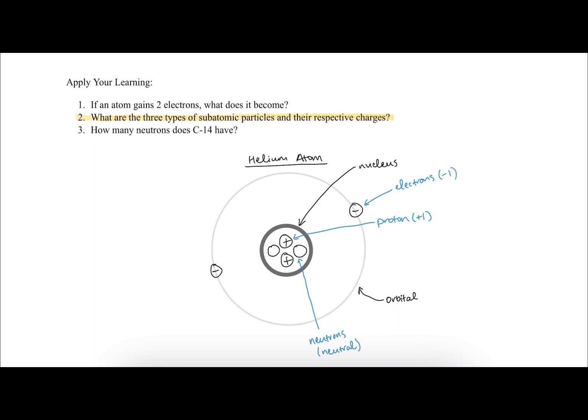So protons and neutrons are inside of the nucleus, protons carry a plus one charge and neutrons are neutral. And electrons orbit around the nucleus inside of orbitals, and they carry a minus one charge.